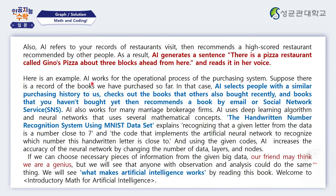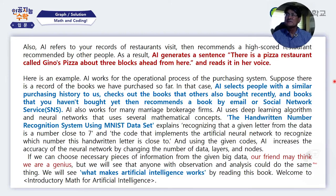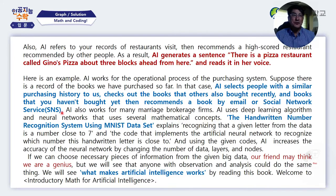There are many examples of AI these days. Here is one example: AI works in the operational process of a purchasing system. Suppose there is a record of the books you have purchased. AI selects people with a similar purchasing history, checks what books others also bought recently, and then recommends books you haven't bought yet via email or social network. AI also works for many marriage brokerage firms, using deep learning algorithms and neural networks built on several mathematical concepts we're going to learn.